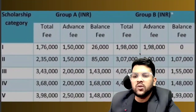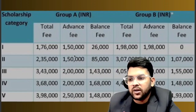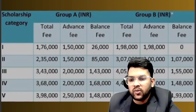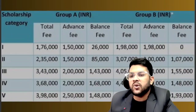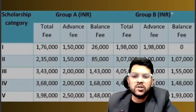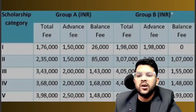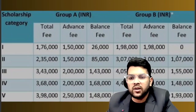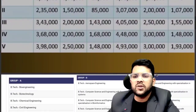For Group B, Category 1 fee is 1,98,000; Category 2 is 2,37,000; Category 3 is 4,03,000; Category 4 is 4,48,000; and Category 5 is 4,93,000. Once you get a seat, if you get Category 1, you pay the total amount. For Category 2, you pay 2 lakh first and the rest later. That is the advance amount, balance fee, and remaining details you can check on the screen.